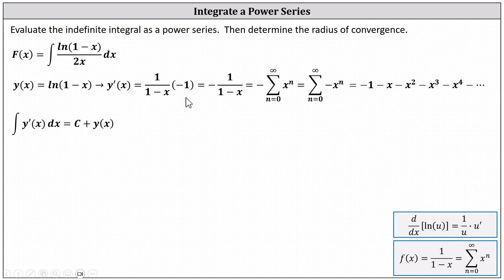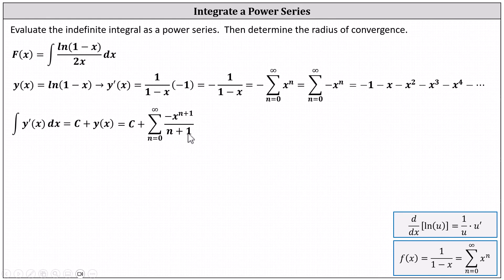Integrating the power series for y'(x), we have c plus the sum from n equals 0 to infinity of the opposite of x to the power of n plus 1, all divided by n plus 1. Notice here we added 1 to the exponent on x, and then divided by the new exponent. We can actually simplify this by starting n at 1 rather than 0. The sum from n equals 0 to infinity of negative x to the power of n plus 1 divided by n plus 1 is the same as the sum from n equals 1 to infinity of negative x to the power of n divided by n.